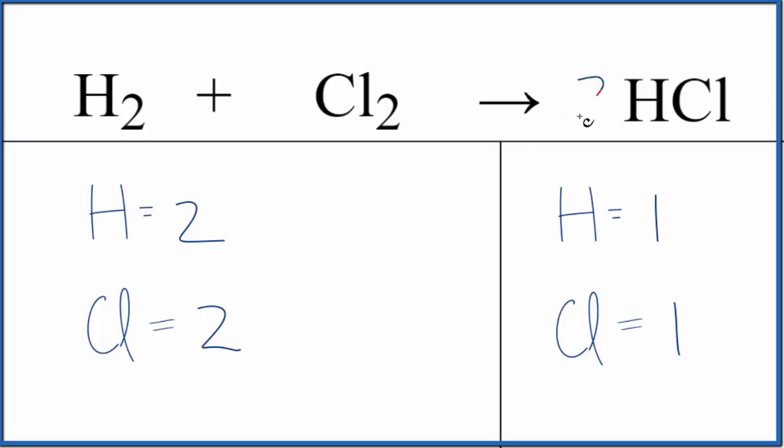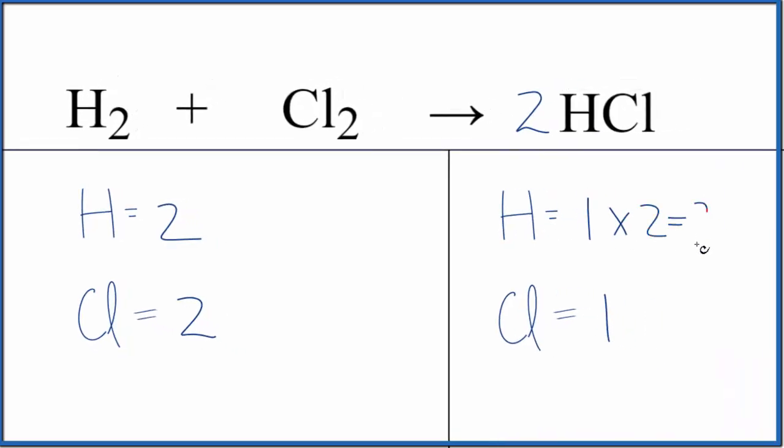And it looks like if I put a two in front of the HCl, this two, we're gonna multiply it by everything here. So two times one hydrogen gives us two hydrogens, two times the one chlorine. That'll give us two of those.